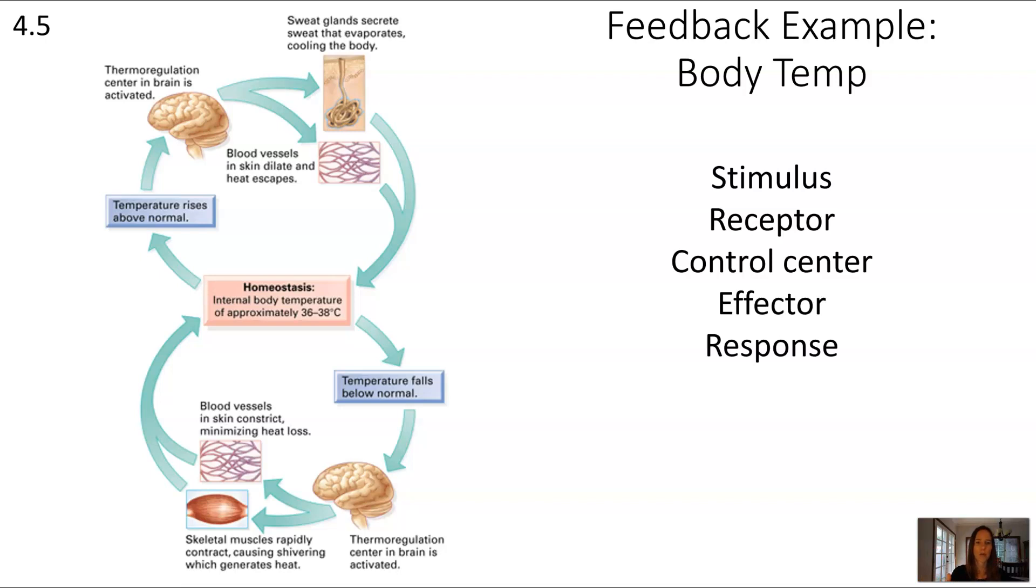If we started with an increase, the temperature rises above normal and our end result is that the temperature reduces, what kind of feedback cycle is this? This is an example of a negative feedback cycle because an increase, an original imbalance of above the normal temperature, results in a decrease of coming down from that imbalance.